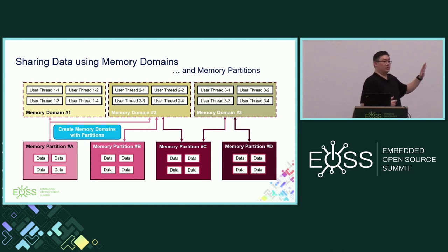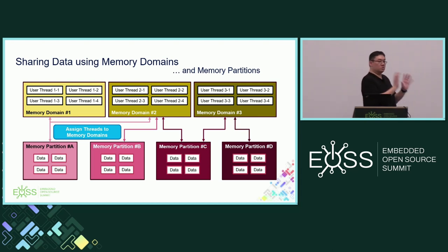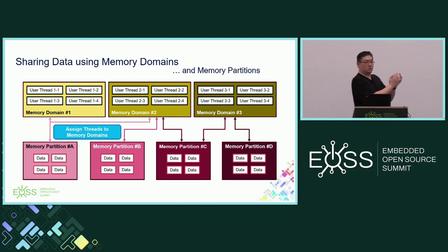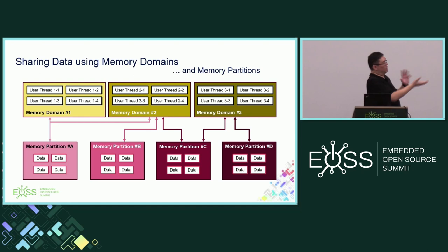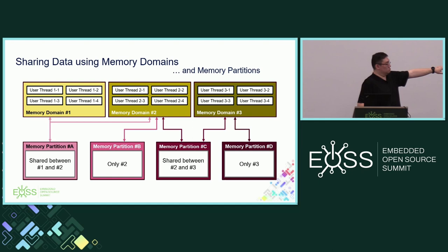Then you create memory domains with references to those memory partitions. At this point the memory domains are not complete — you have to assign threads to the memory domain for them to be complete, because a memory domain with no threads has no purpose. The threads run within the concept of a memory domain so that everything in that domain can be shared. For memory partition A, threads from memory domain 1 and 2 can read and write the data; for memory partition B, only memory domain 2 can access it, and so forth for C and D.